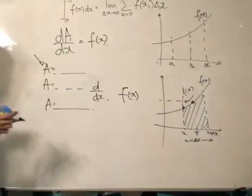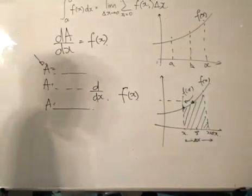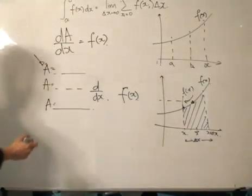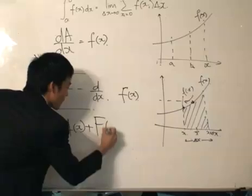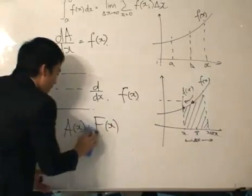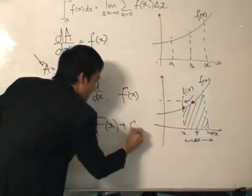And to clear that up, what they did was they wrote this. Now, knowing that A is only one of the anti-derivatives, what I'll do is that I'll write A equals a big F over here plus c.